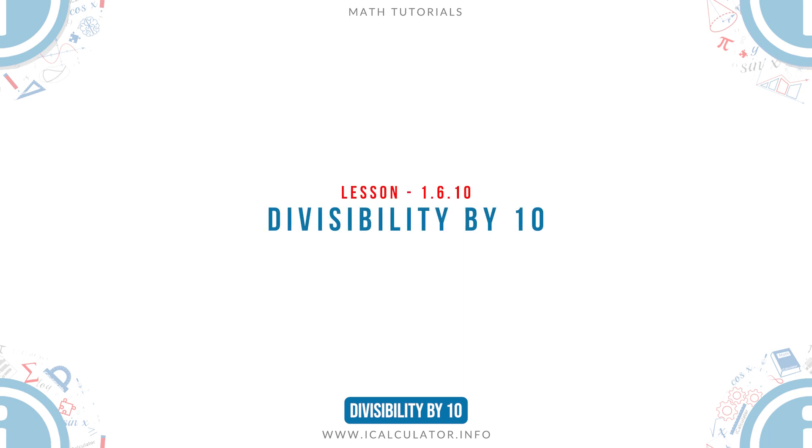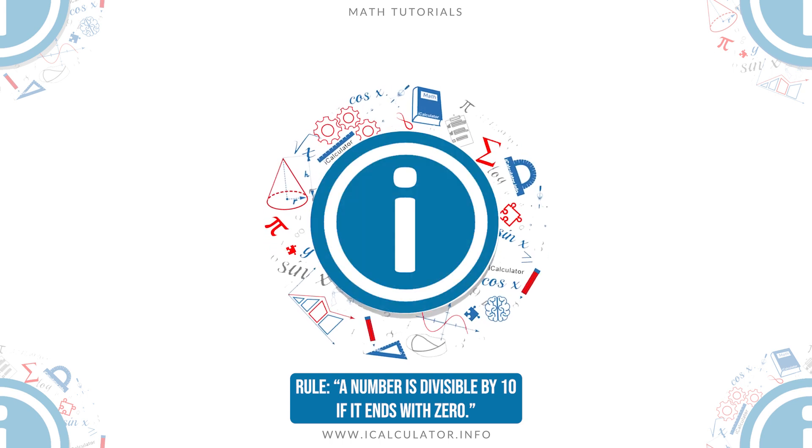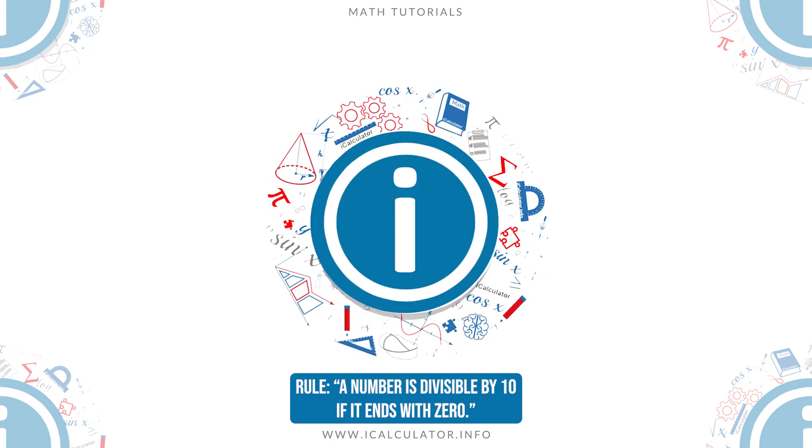Divisibility by 10. Rule: A number is divisible by 10 if it ends with 0.